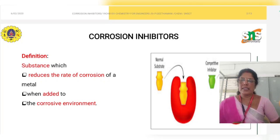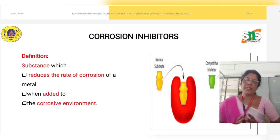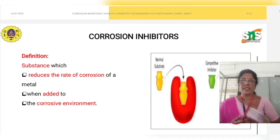Good morning students. Another important technique of corrosion control is corrosion inhibitors. Corrosion inhibitors are chemical substances which are used to reduce corrosion. Many types of corrosion controls are there. We have seen cathodic protection — sacrificial anodic or impressed current cathodic protection techniques. Paint is also one of the important techniques to control corrosion.